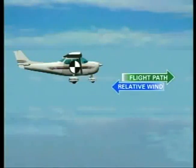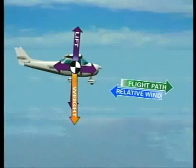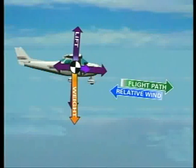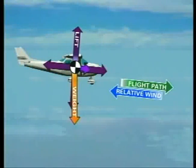In stabilized descending flight, like a stabilized climb, the aerodynamic forces acting on the airplane are in equilibrium. However, during a descent, one component of weight acts perpendicular to the flight path opposing lift, while the other acts forward along the flight path, adding to thrust and opposing drag. If the power setting is unchanged, airspeed increases as the nose is lowered in a descent, and a corresponding increase in parasite drag works to balance the force of weight. When airspeed stabilizes, aerodynamic forces are again in equilibrium.